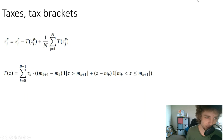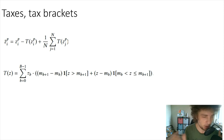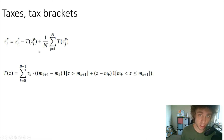They then introduce tax brackets mathematically. Using an identity function structure: if you're between a given income and another income threshold, you pay a specified tax rate. The total amount you take home can be modeled as what you made before minus your tax obligations — essentially your after-tax income.